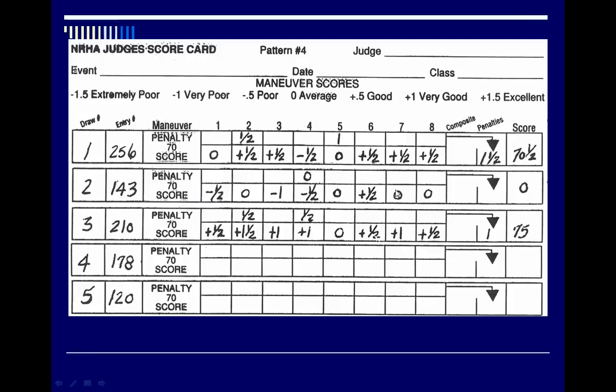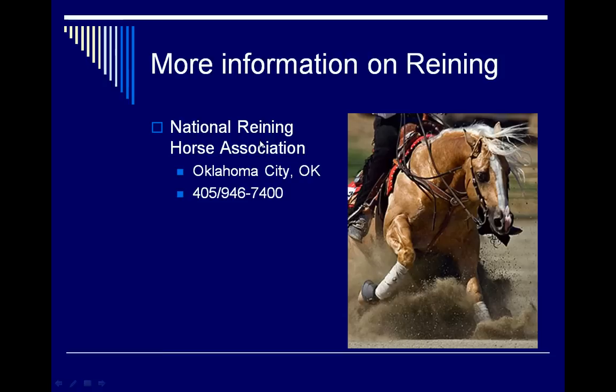When doing classes for judging contest purposes, be sure to total each run as it's completed. Also make grids and notes in your notebooks to help remind you as you're preparing a set of oral reasons — noting what they did, positive or negative, and especially what some of the penalties were. That covers the basic evaluation of reining, including the penalties and the difference between penalty and maneuver scores.